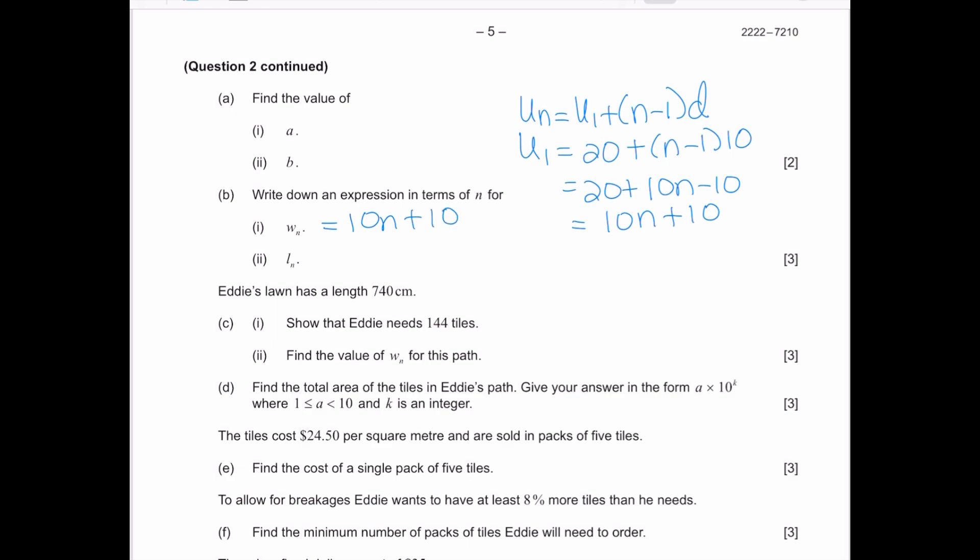I can do the same thing now for the length, in which case Ln, the last term, is going to be the first term which is 30, plus n minus 1 times 10, because every single time you are adding 10 to it, which is 30 plus 10n minus 10, which is 10n plus 20. This is a three-point question. They give you one point for understanding that it's an arithmetic sequence problem, and then they give you the other two points for having each correct answer.